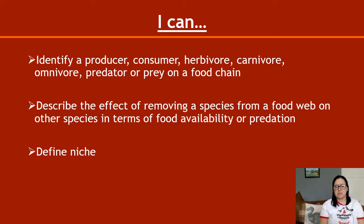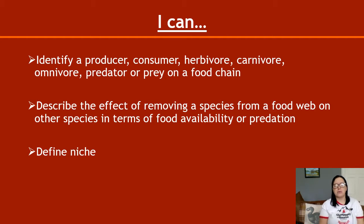Quite a few of these words they expect you to know from primary school: carnivore, omnivore, herbivore, predator, prey. Hopefully you've heard these words before. The ones that should seem unfamiliar may be producer and consumer.